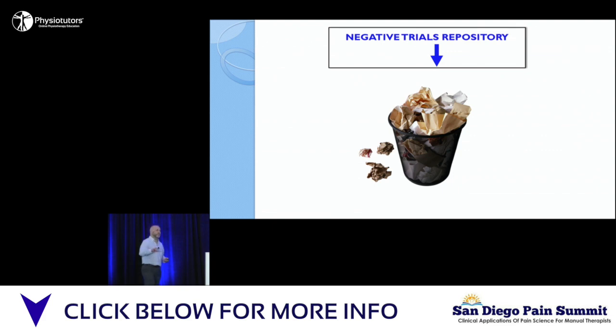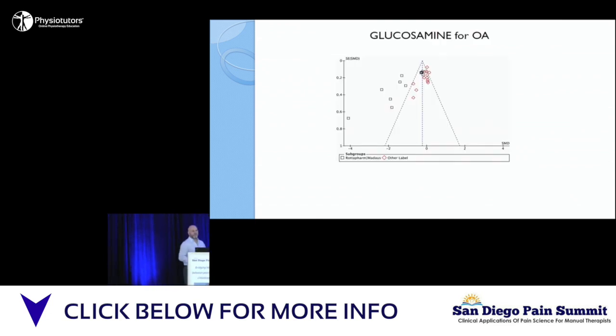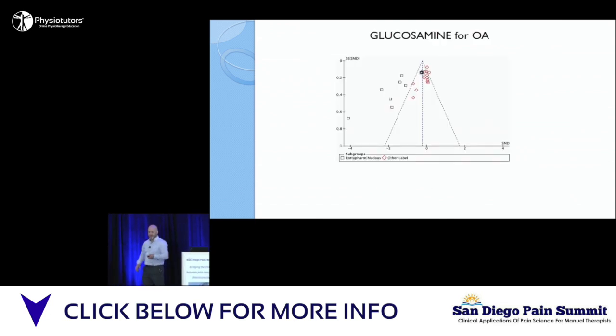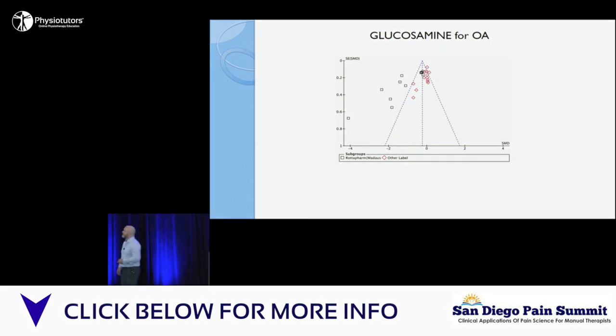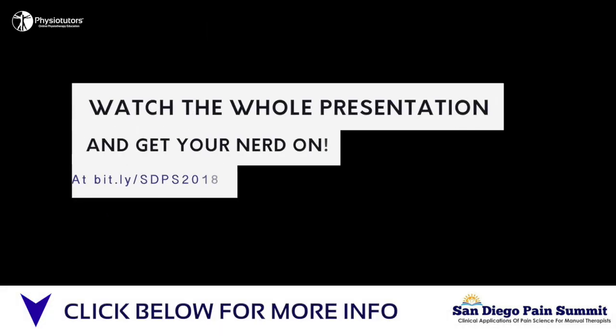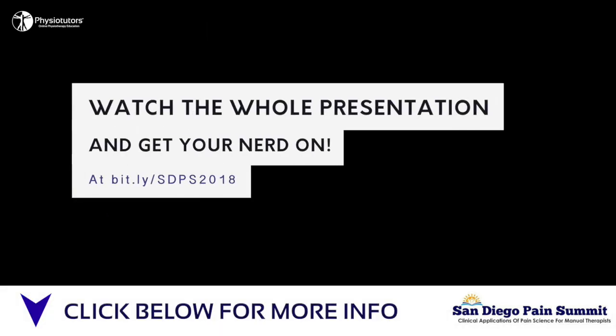Publication bias is a serious infrastructural problem. This is a great example of it — this is a funnel plot, which is another nerdy thing.